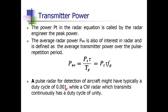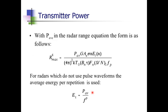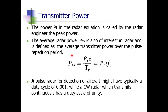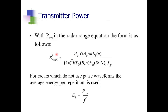For pulse radars, the duty cycle typically ranges from 0.001 to 0.5. A duty cycle of 0.5 means a very wide pulse. Continuous wave radars have a duty cycle of 1 since they transmit continuously with no pulse differentiation. Now the Rmax expression must be converted from Pt to P_avg. Substituting Pt = P_avg / (τ × fp), we replace Pt in the radar range equation accordingly.